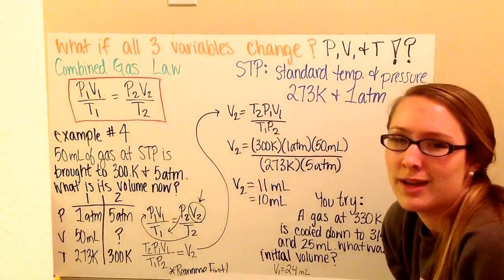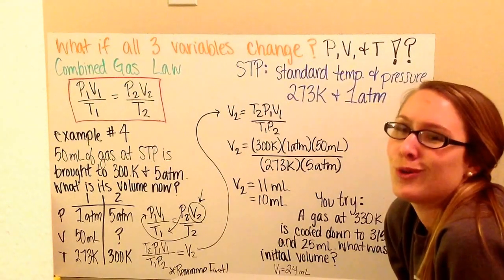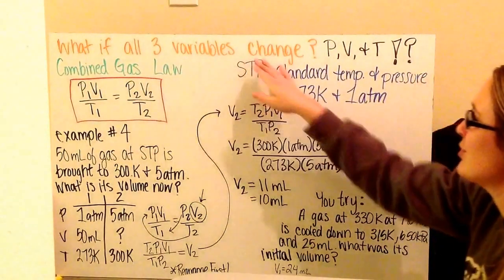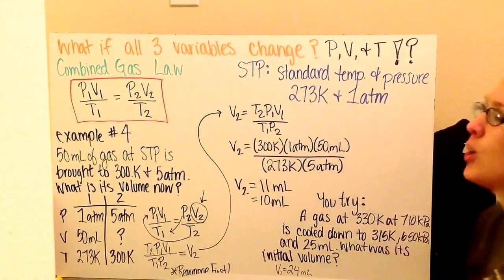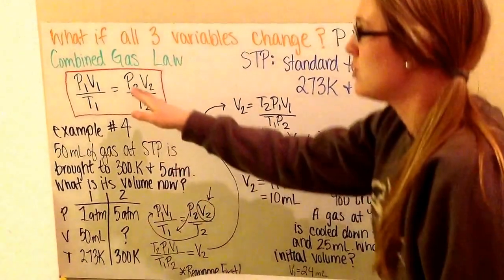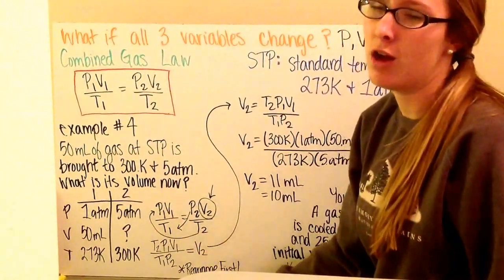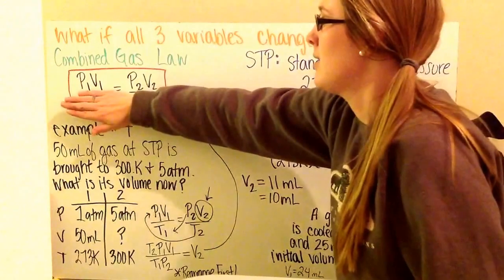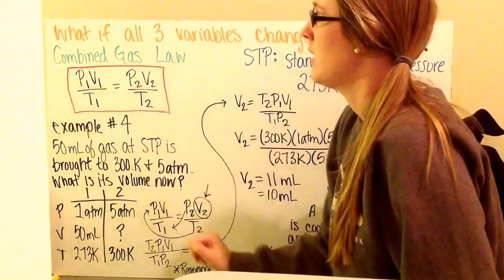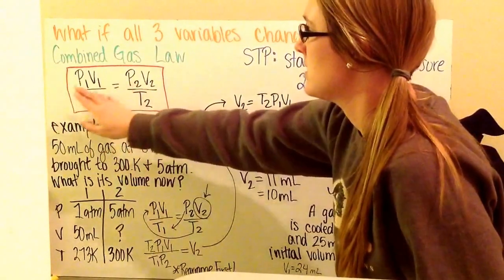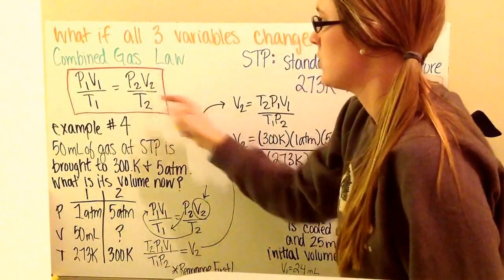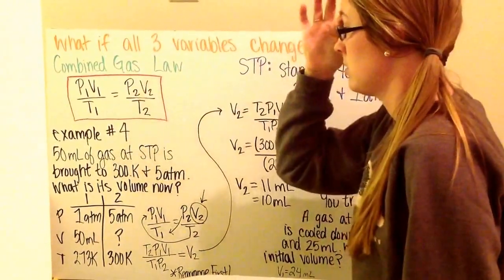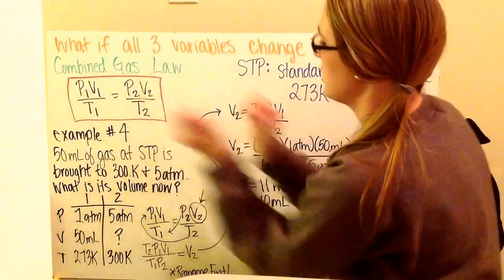In real life, things are not usually held constant — all three variables can change at once. If pressure, volume, and temperature all change, we use something called the combined gas law, which simply combines all three basic gas laws together. Boyle's Law gives P1V1 = P2V2; Charles' Law gives V1/T1 = V2/T2; and Gay-Lussac's Law gives P1/T1 = P2/T2. They've just been combined together.